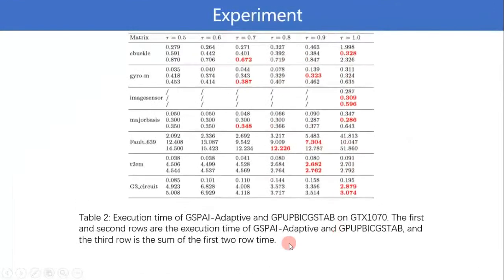Second, we take GTX 1070 to investigate the effect of increasing tau on the execution time of GSPAI-Adaptive. Beyond a certain threshold, the increase of tau can have a reverse effect on the execution time of GSPAI-Adaptive. The experimental results are shown in Table 2.